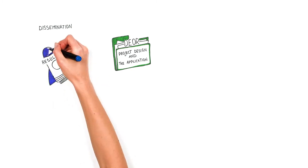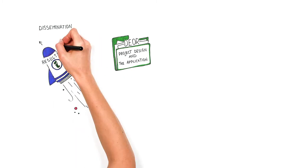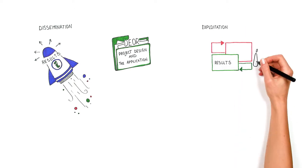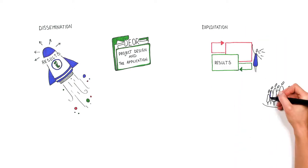Dissemination is a planned process of providing information on the results of the project. Exploitation is a planned process of transferring successful results and convincing others to implement these results in their practices and policies.